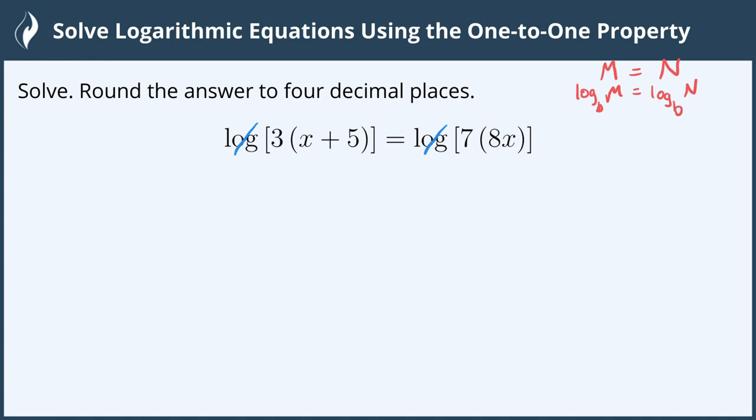we can remove them. Instead of taking the log, we can take them off, which leaves us with m equals n. So in this case 3 times x plus 5 must equal 7 times 8x.